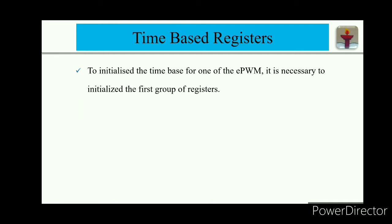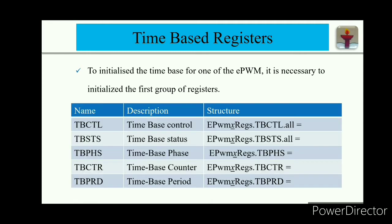To initialize the time-based module for one of the EPWM units, it is necessary to initialize the first group of registers. These are the different kinds of time-based registers: time-based control register, time-based status register, time-based phase registers, time-based counter registers, and time-based period registers. These registers can be initialized in the program with the help of this structure: EPWM1 EPWMX registers dot tbctl dot all.